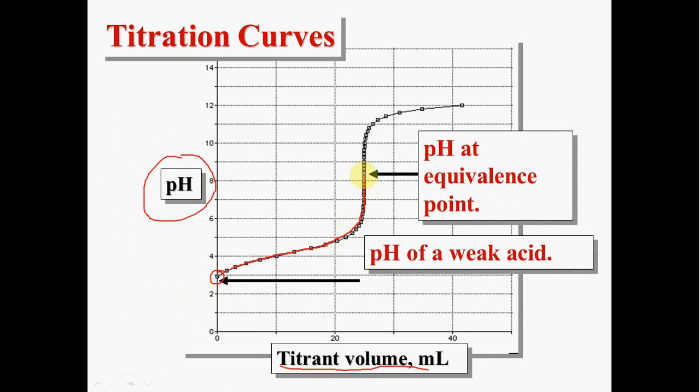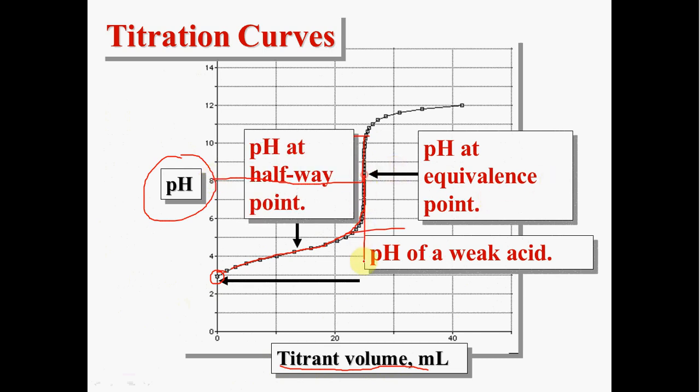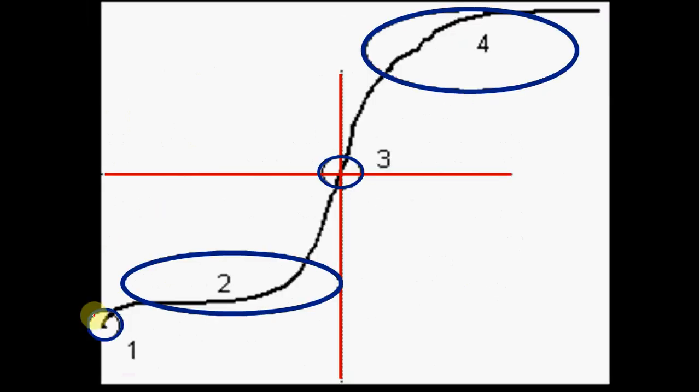Here is your equivalence point where that pH literally jumps up and you take the midpoint of that line. The halfway point would be the volume at the equivalence point cut in half. So that's a very useful point for finding the Ka of an acid. And then to define the shape of the curve you add extra hydroxide so that you get this nice leveling off of the curve.